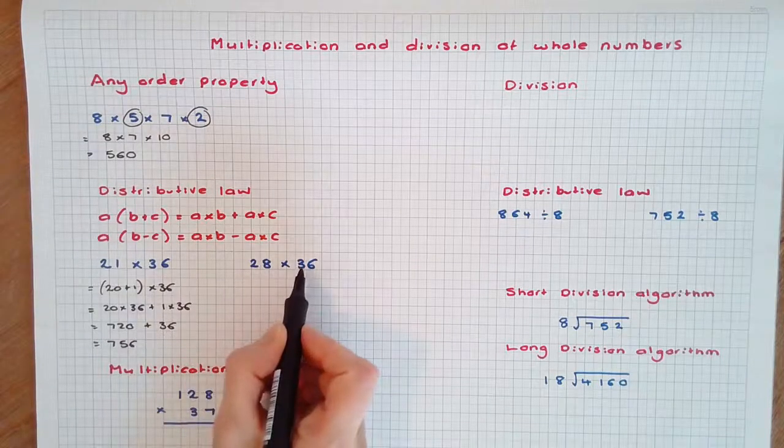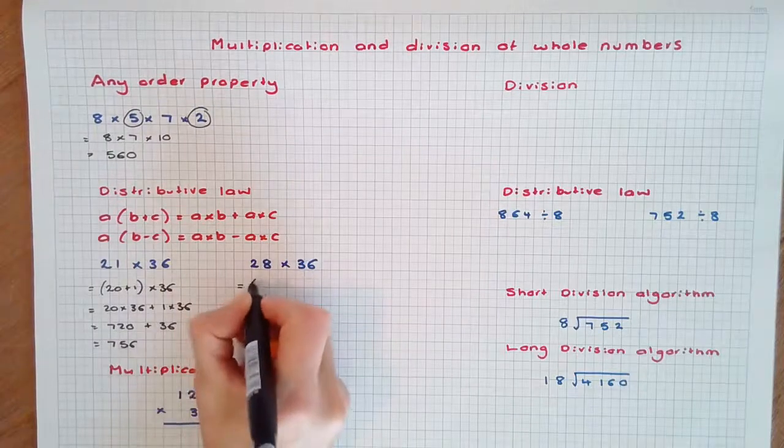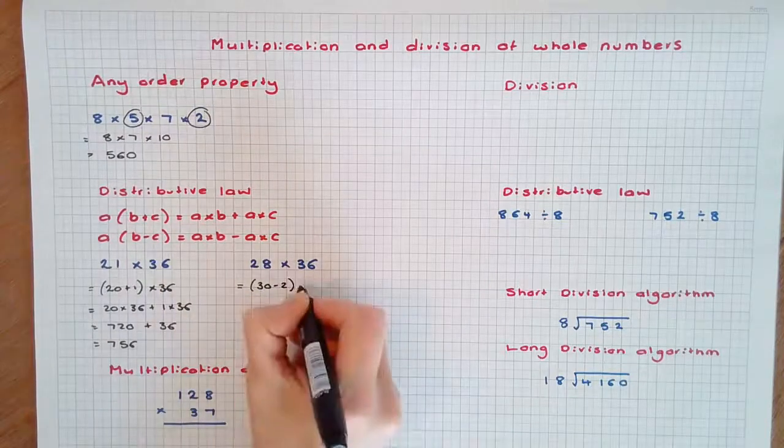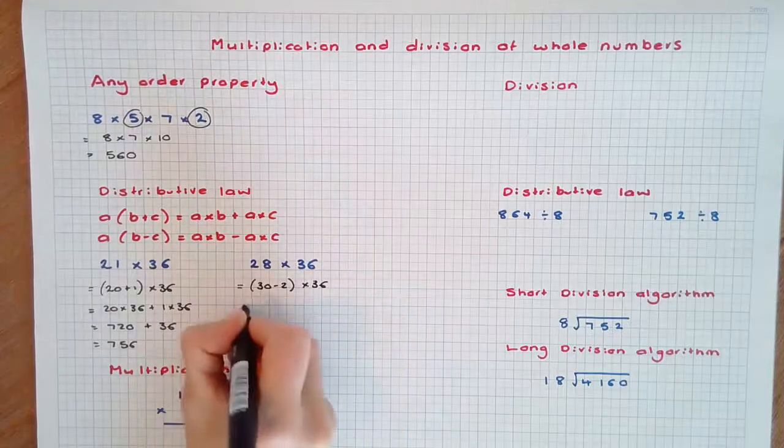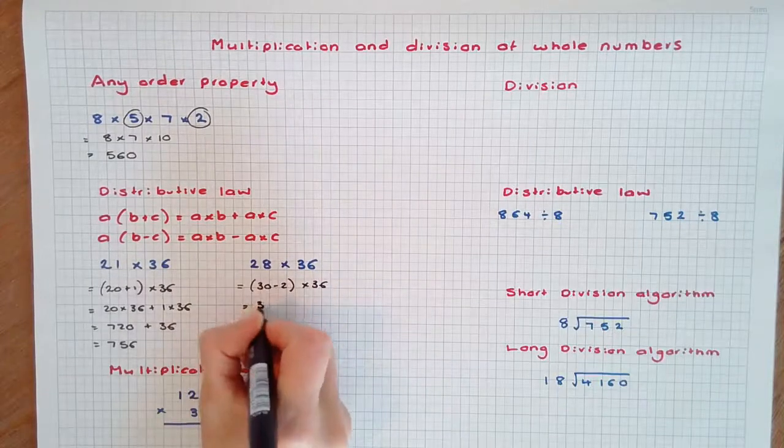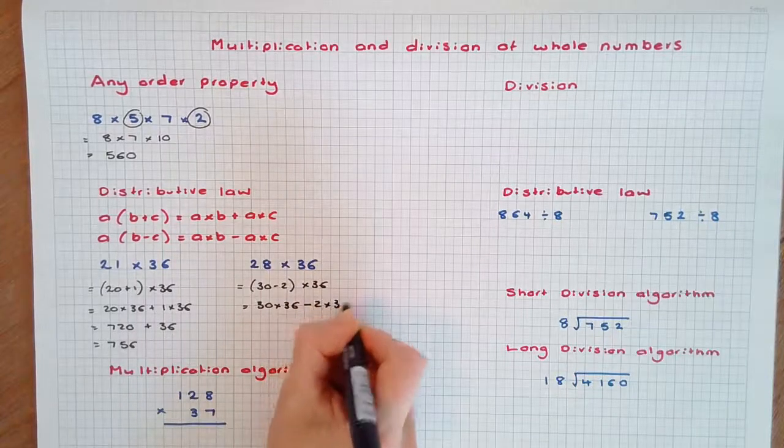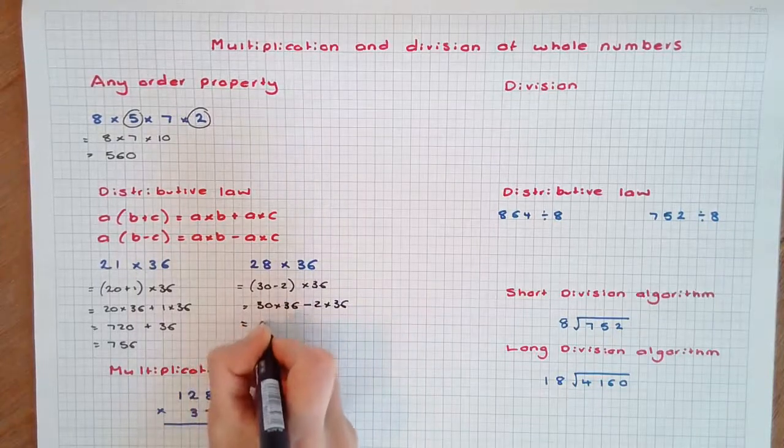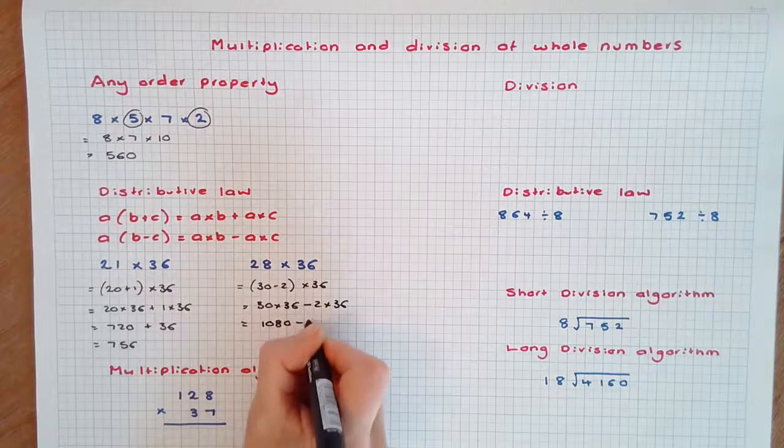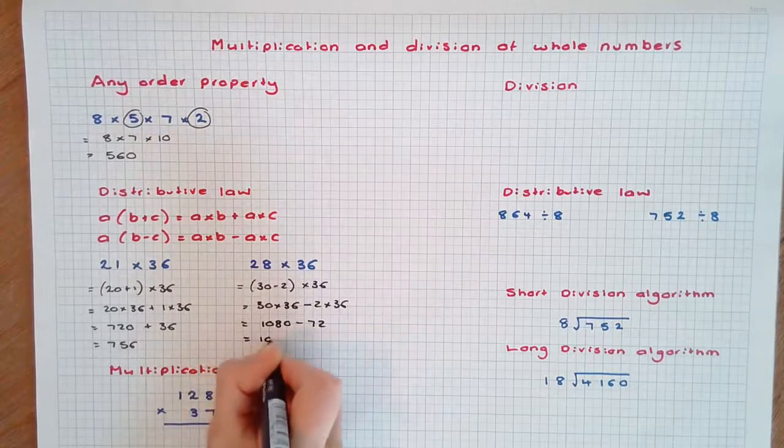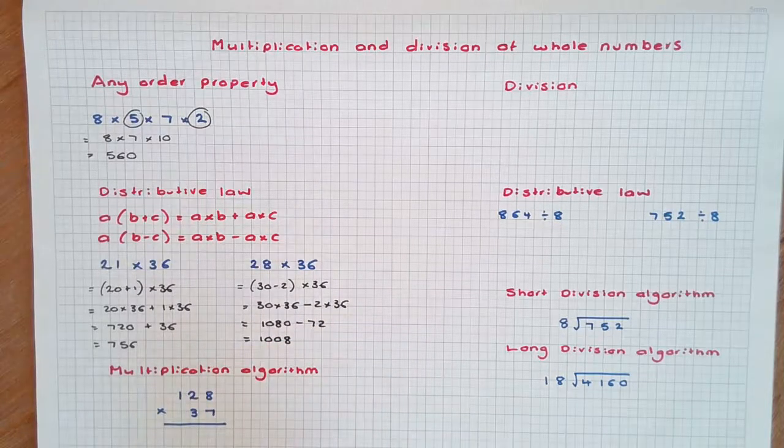28 × 36 could be rewritten as (30 - 2) × 36. This time it's 30 × 36 minus 2 × 36, giving 1080 - 72, which equals 1008.